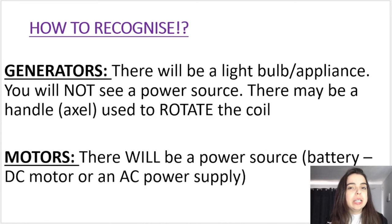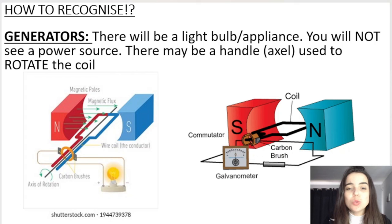It's often confusing when you see a question or a diagram and you're not sure if you're dealing with a generator or a motor. So this is how you recognize the difference. If you're looking at a generator, you're probably looking at something that has a light bulb, an appliance, a resistor, or even a voltmeter, or like you see over here, a galvanometer attached.